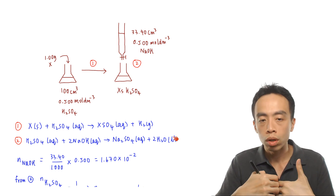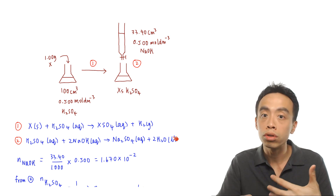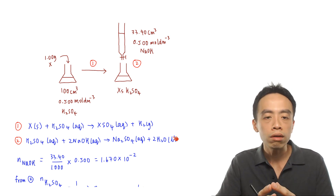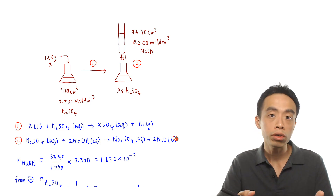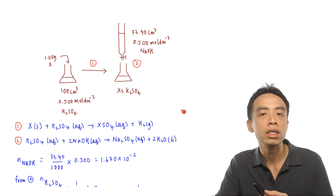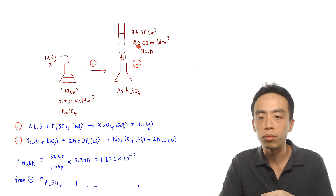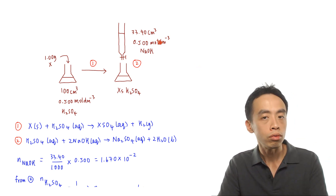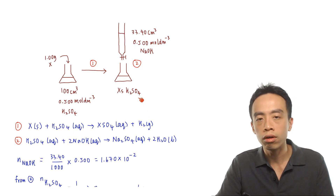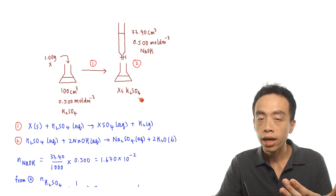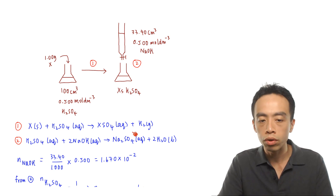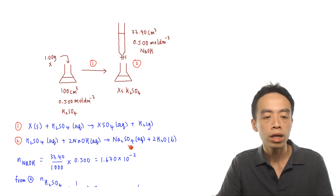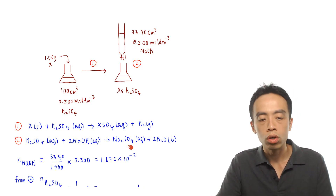My preference when answering titration or solution stoichiometry questions is to account for every reaction because we need the mole ratio. If I don't know the mole ratio, even if I determine the moles of NaOH, I cannot use it to determine moles of H₂SO₄ without knowing the reaction. So at the beginning, I balance the equation straight away, then the mole ratio is clear, making calculation a lot easier.